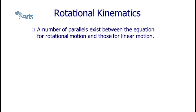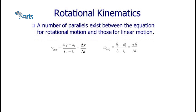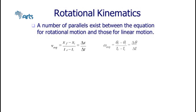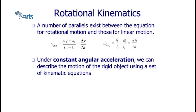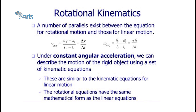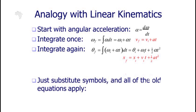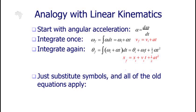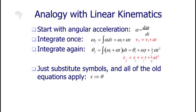In rotational kinematics, a number of parallels exist between the equations for rotational motion and those for linear motion. For example, average velocity is Δx/Δt, and average angular velocity is Δθ/Δt. Under constant angular acceleration, we can describe the motion of a rigid object using kinematic equations with the same mathematical form as linear equations. To find the analogous rotational equations, substitute: x replaced by theta, v replaced by omega, and a replaced by alpha.